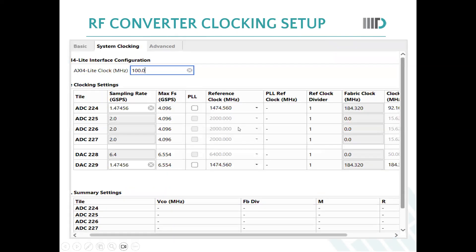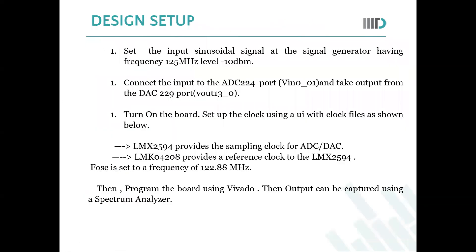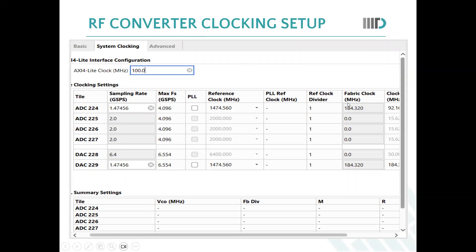The clocking setup has a system clock frequency of 100 MHz. The ADC and DAC sampling rate is set to 1.47456 giga-samples per second. At the output, the streaming frequency for our data signal is 184.320 MHz.